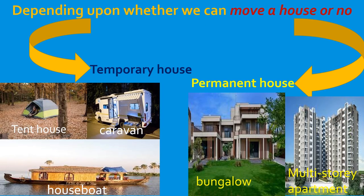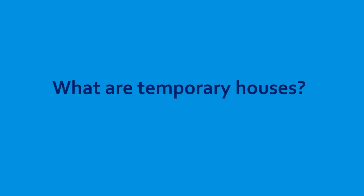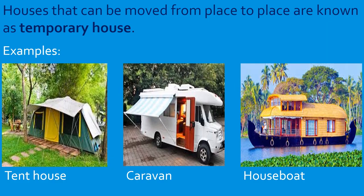Depending upon whether we can move a house or not, there are two types of houses: temporary houses and permanent houses. Temporary houses are tent houses, caravans, and houseboats, whereas permanent houses are bungalows and multi-storey apartments. Houses that can be moved from place to place are known as temporary houses. You can carry your temporary house with you wherever you go.